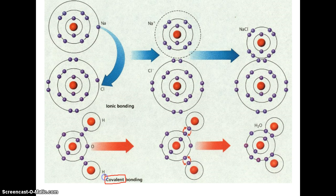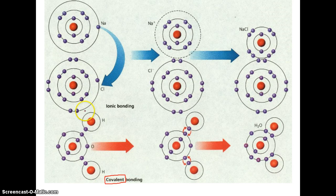Remember I said that electrons — which are around the outside of the nucleus, and in these pictures are shown as purple dots — will dictate how different atoms correspond to and behave when other atoms are around. In a covalent bonding situation, like we have in the bottom half of this picture, atoms will share electrons. That's the important part: covalent means sharing electrons. They share electrons in order to get to a point where their outer shell has a total of eight electrons.